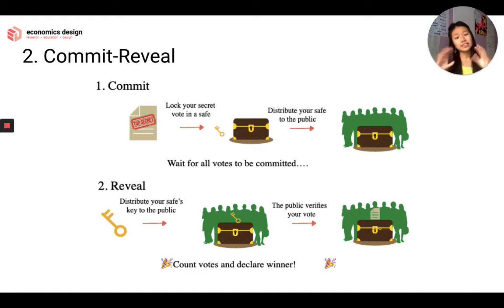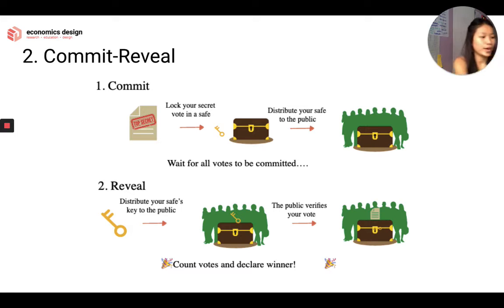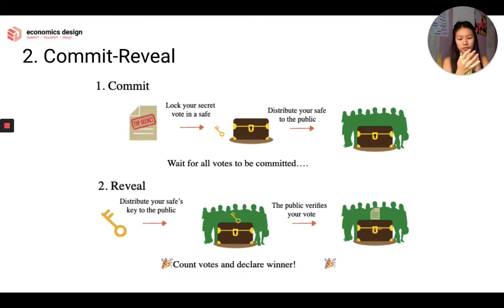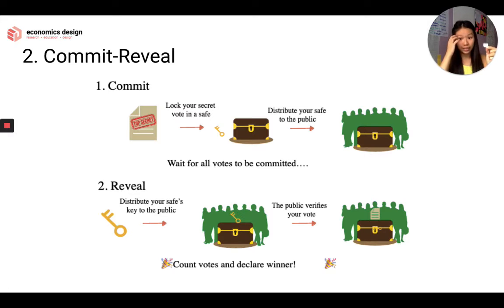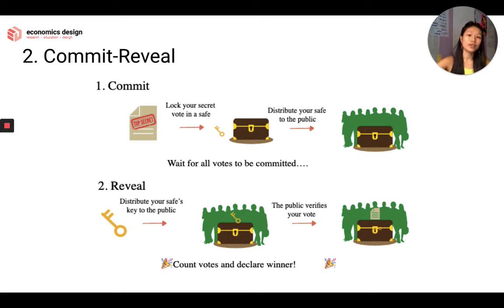So what are the solutions? The first one is called Commit Review. Commit Review works like this: first you have your decision, so you write your proposal down on a piece of paper, cover it, keep it secret, and lock it. Then you wait, and you shout to everyone and say, 'I vote for A.' So you don't tell people what's inside — you just tell everyone your vote.